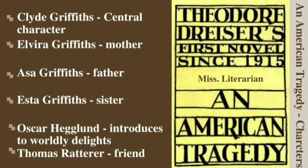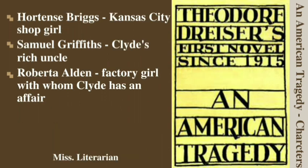Oscar Heglett introduces Clyde to worldly delights. Thomas Ratterer is a friendly Green Davidson bellhop who later helps Clyde get a job at the Union League Club in Chicago. A bellhop is a hotel or club employee who escorts guests to rooms and assists them with luggage. Hortense Briggs is a shop girl who persuades Clyde to buy her things.